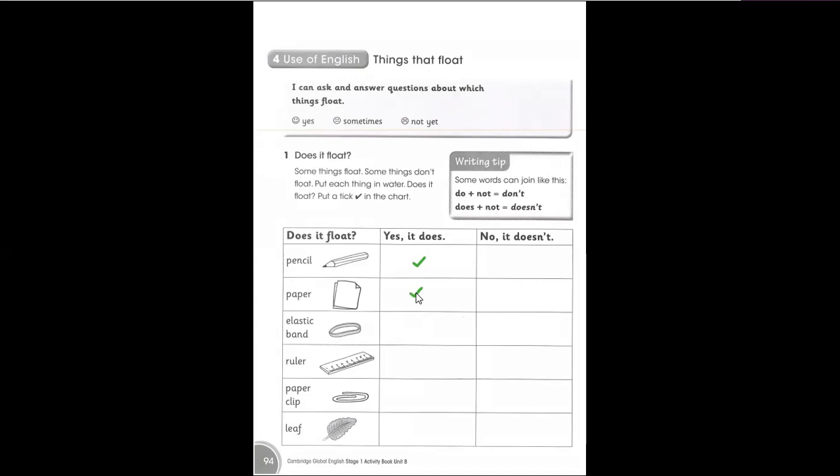Elastic band. Remember this: the things that have heavy weight, they do not float. They sink inside the water, whereas the things that have light weight, they float on the water. So, the next word is elastic band. No it doesn't, it does not float. So you are going to put a cross to say that elastic band doesn't float.